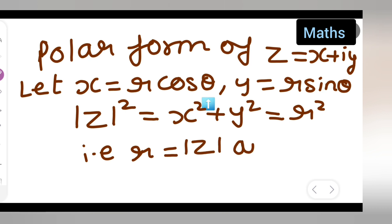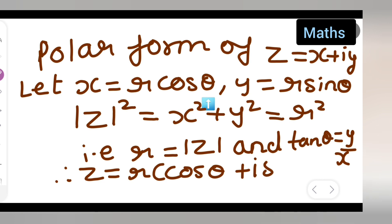And you have tan theta to be y by x. Therefore I can say that z is equal to r cos theta plus i sin theta.